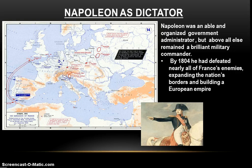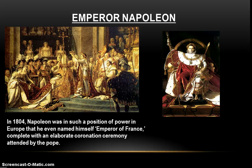Above all else, the guy was an amazing general. Using his incredible grasp of strategy, formations, use of artillery, and leadership, he won battle after battle, defeating France's enemies one by one until by 1804, he had defeated nearly all of them, expanding the nation's borders and building a European empire. By 1804, Napoleon was in such a position of power that he named himself Emperor of France. Dropping all pretenses of republic, he even brought the Pope in for a special coronation ceremony — and really shocked everyone when, instead of allowing the Pope to crown him, he ripped the crown from the Pope's hands and placed it on his own head.